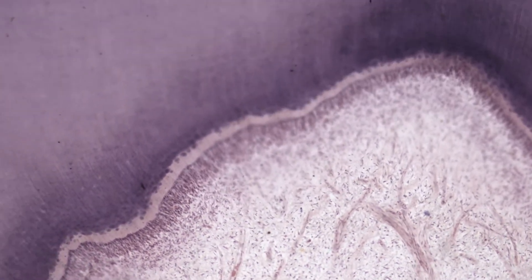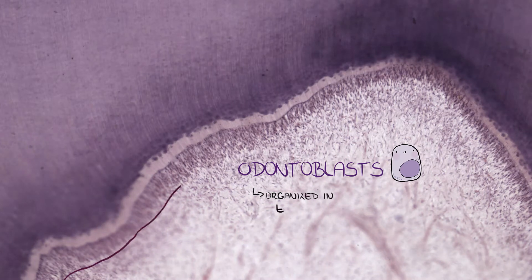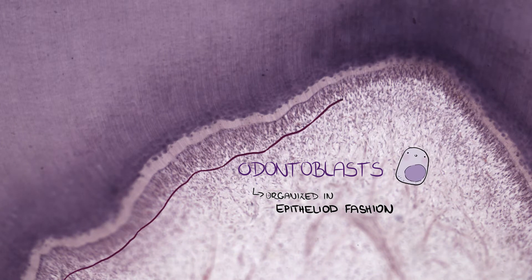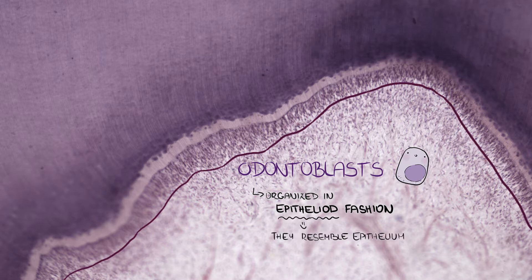Around the pulp there is a layer of cells called odontoblasts, organized in epithelioid fashion. This means that they resemble epithelium at first glance but are of mesenchymal origin.